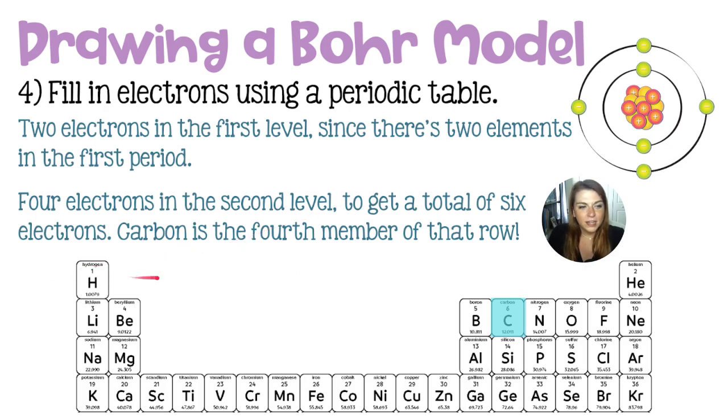In the first energy level, hydrogen and helium, there are two elements and that tells you that only two electrons will fit in the first energy level. We can fit up to eight electrons in the second energy level because there are eight elements in the second period of the periodic table. Carbon will only need four and we can also determine that by the fact that carbon is the fourth element in this row. So it'll have four electrons in its second energy level.